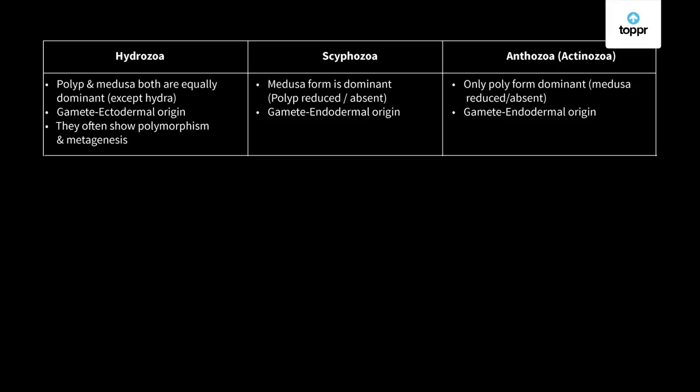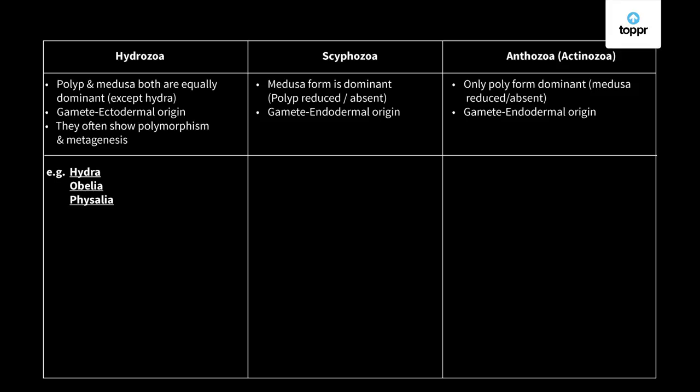Examples of hydrozoa include hydra, obelia, and physalia. Obelia is also called sea fur, and physalia is also called the Portuguese man-of-war because it is neurotoxic and has gas glands present. Examples of scyphozoa include aurelia, which is also called the jellyfish, and rhizostoma, which is called many-mouth or polystoma.